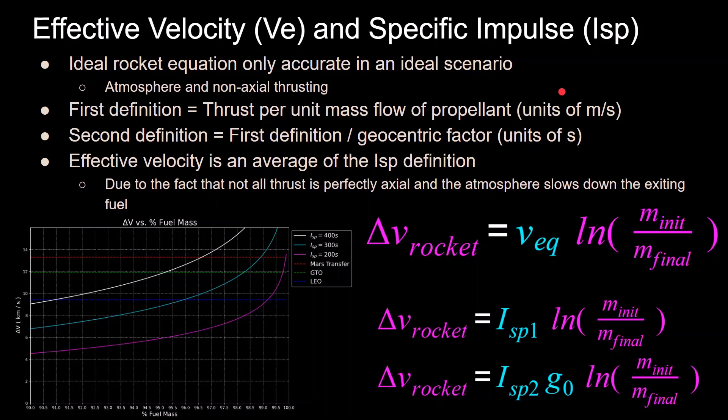The way that people talk about specific impulse usually day to day is through a value that is divided by the geocentric factor. This first definition divided by the geocentric factor, which is 9.81 meters per second squared, the acceleration due to gravity at Earth's surface. This definition of specific impulse is in units of seconds, and this is what you'll usually see when you see a spec of a rocket engine. Since this is not an ideal scenario in real life, instead of V fuel in the ideal rocket equation, you have V effective or V equivalent velocity. Note that this value is not constant throughout flight, since the atmospheric density is changing as you gain altitude. That's why rocket engines will tell you their specific impulses at sea level and at vacuum. Vacuum will always have a higher value, since there's no air pushing back on the fuel flow.